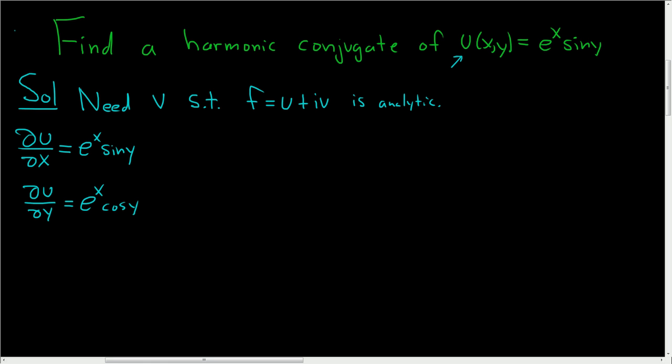Now let's write down the Cauchy-Riemann equations. We need u and v to satisfy them. We need del u del x to equal del v del y, and del u del y to equal negative del v del x.